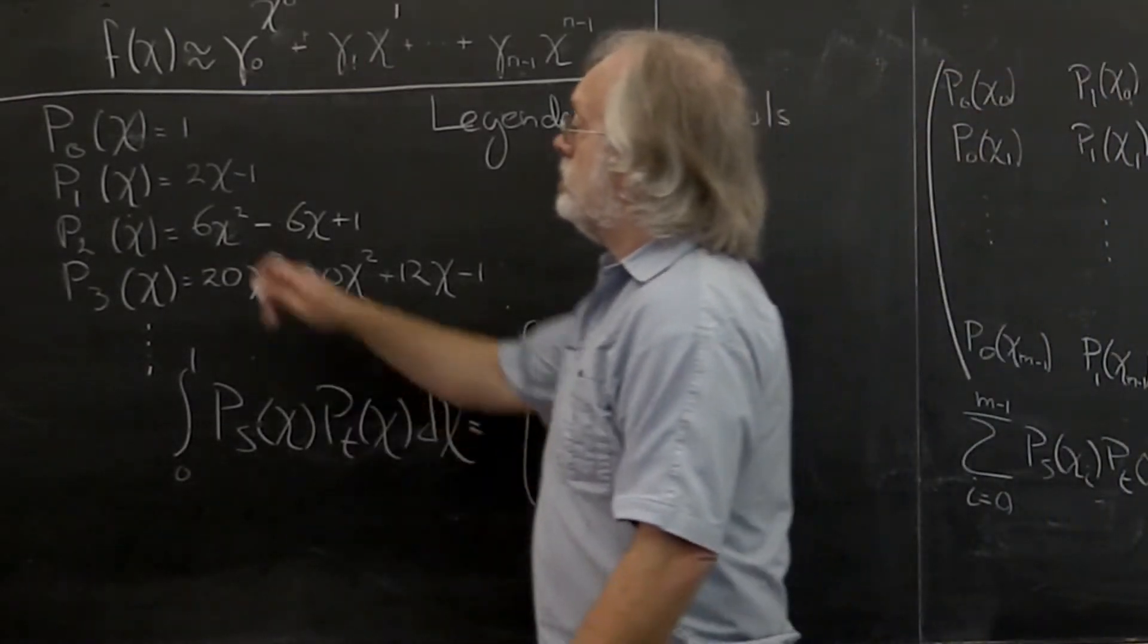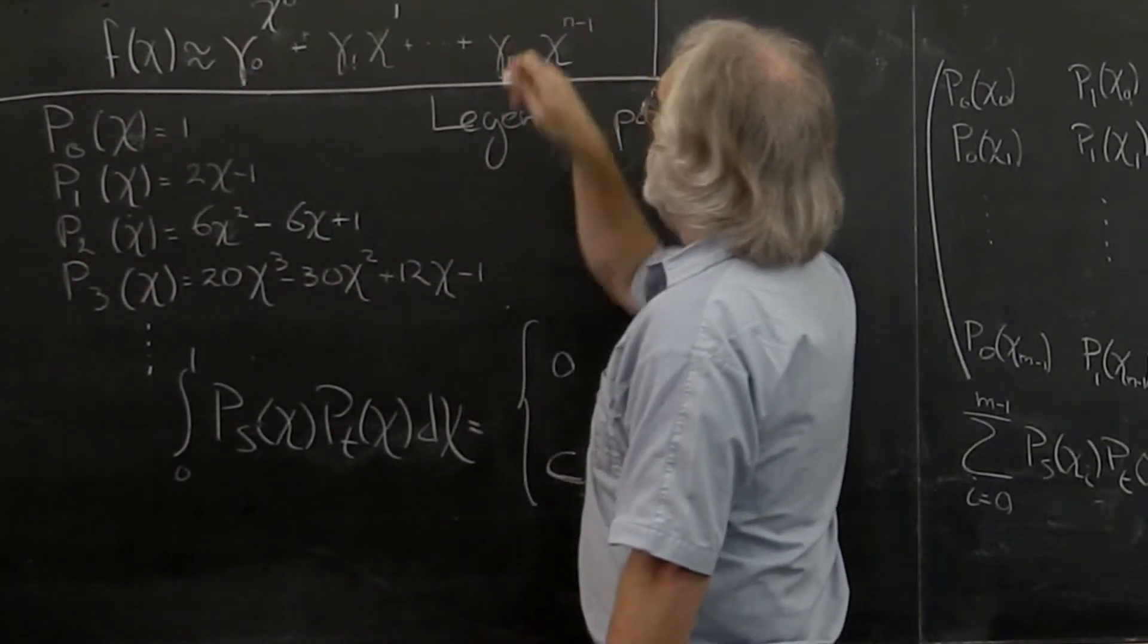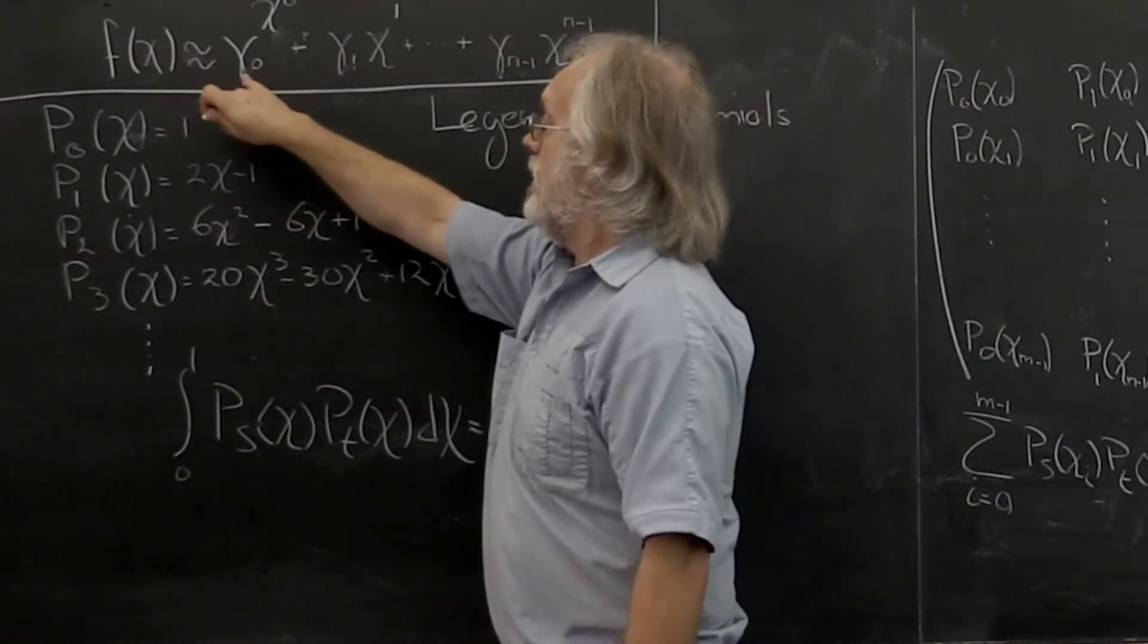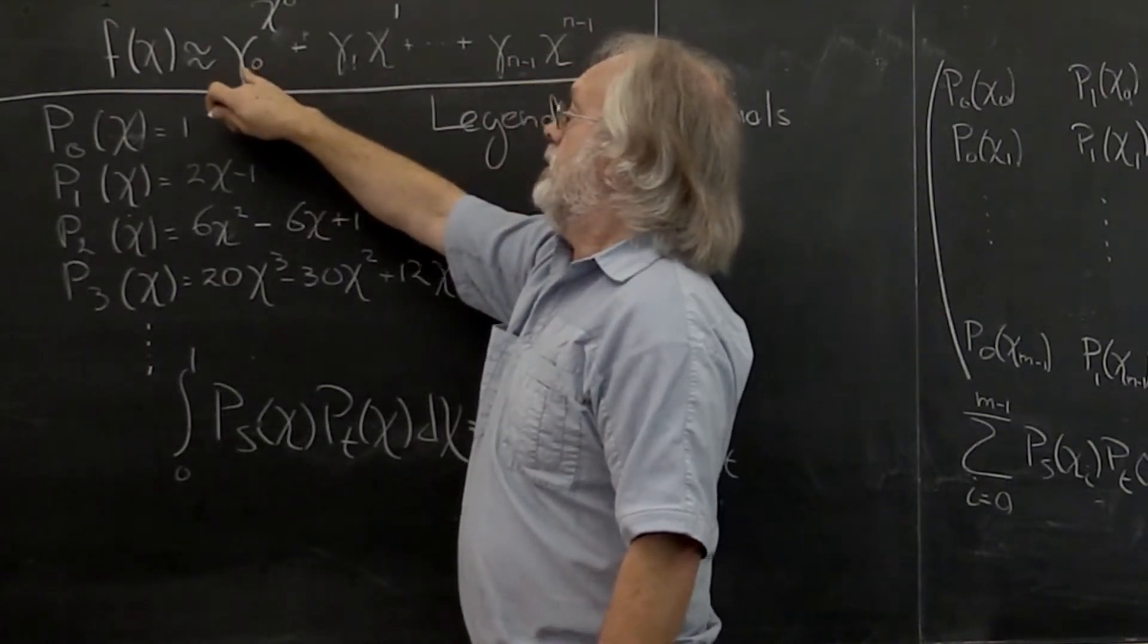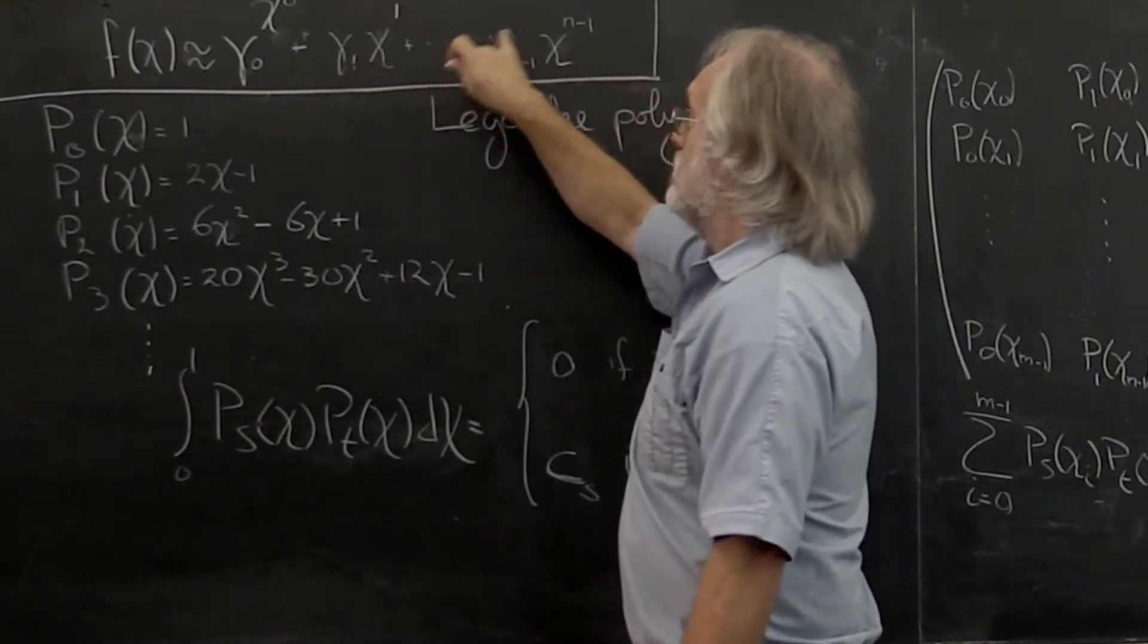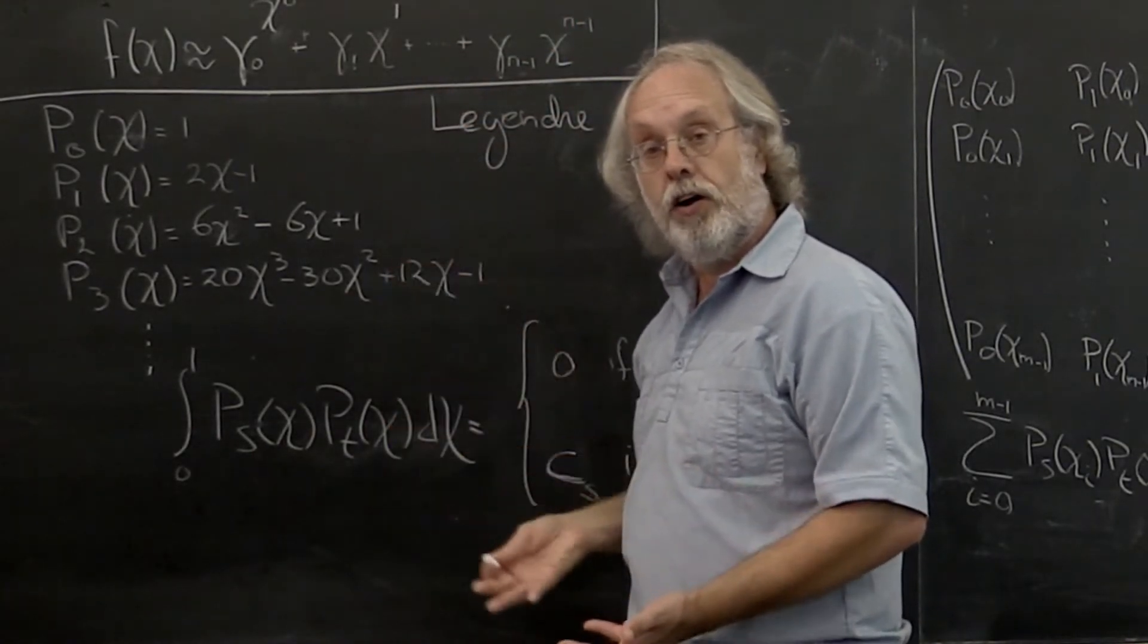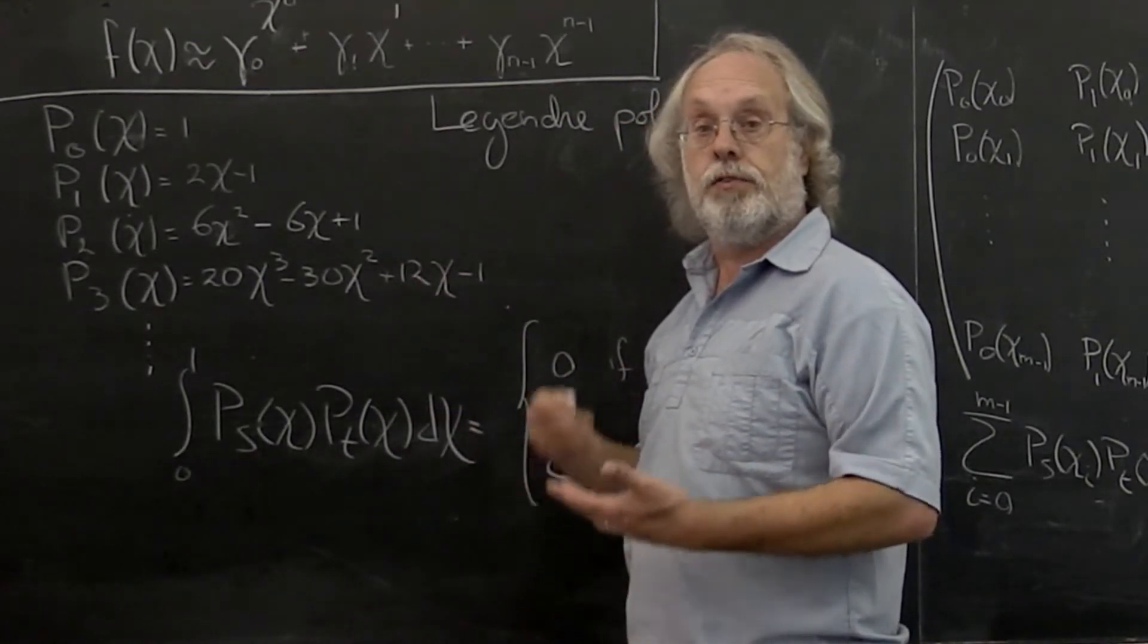Now we set out to approximate our function f with a polynomial of degree n minus 1. At the moment we're saying that we want to take a linear combination of the function 1, then chi, then chi squared, and so forth. The problem is that those parent functions start looking very much the same on the interval 0 to 1.